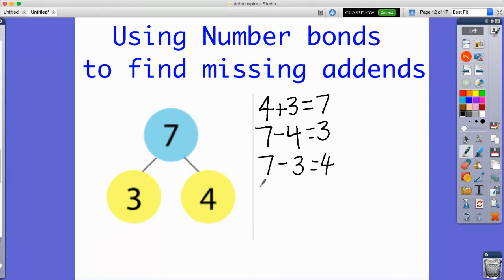So these would be all the different combinations that would match this number bond. Typically you will have four of them, so just try to remember that. But this main one right here that we're looking for is joining these two addends to make this sum. That is the end of today's math strategy video.